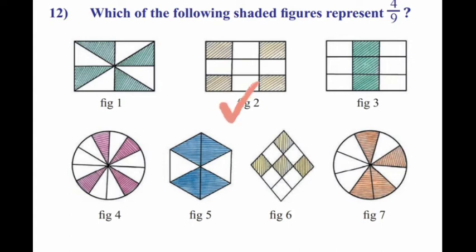It should be 9 equal parts, 4 should be shaded. 9, 10, 11, 12. It is not 9. Figure 5, 1, 2, 3, 4, 5, 6. Next figure 7, 1, 2, 3, 4, 5, 6, 7, 8, 9, 4 should be shaded. So figure 6. Figure 7, observe, 1, 2, 3, 4, 5, 6, 7, 8, 9, 4 are shaded. You should mark 3.